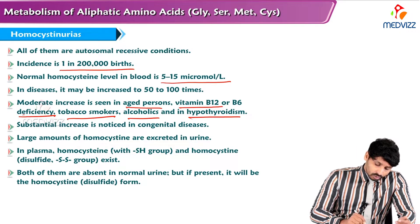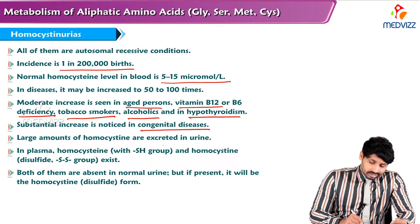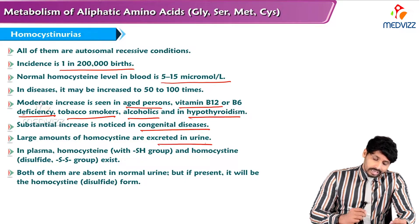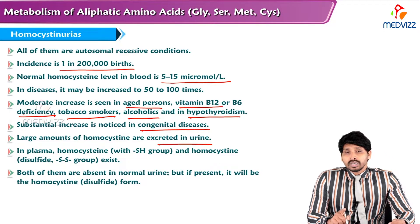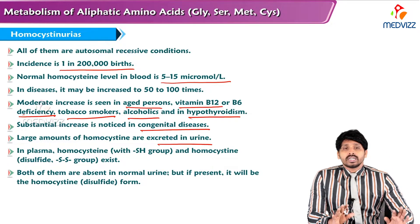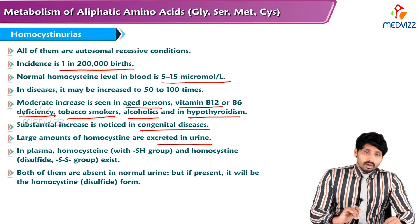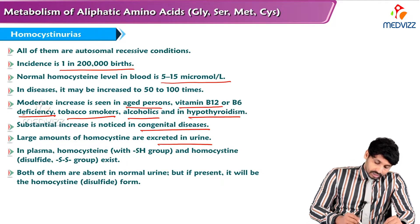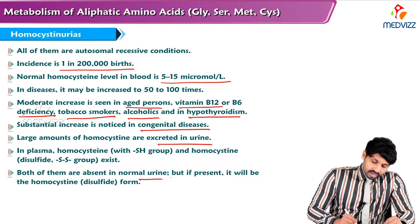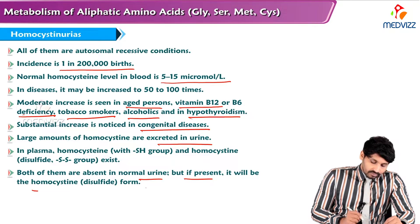A substantial increase is noticed in congenital diseases, where large amounts of homocysteine are excreted in the urine, leading to the condition homocystinuria. In plasma, homocysteine with sulfhydryl groups and homocysteine disulfide groups exist. Both of them are absent in normal urine, but if present, it will be in homocysteine form.